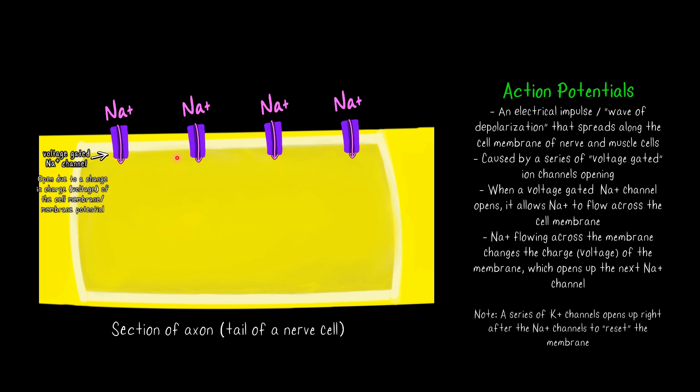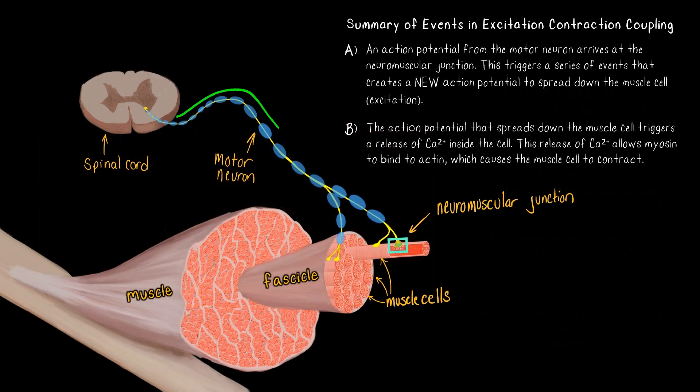If you have already started learning about action potentials, you'll know that a series of potassium channels is going to open up right after this, and that's basically going to reset the membrane, which would allow the next action potential to come along. But for the purposes of this video, what we really want to focus on is that we've got these sodium channels opening up one right after the other, because that's the part that's driving everything forward and creating the action potential that's going to spread all the way down to the neuromuscular junction.